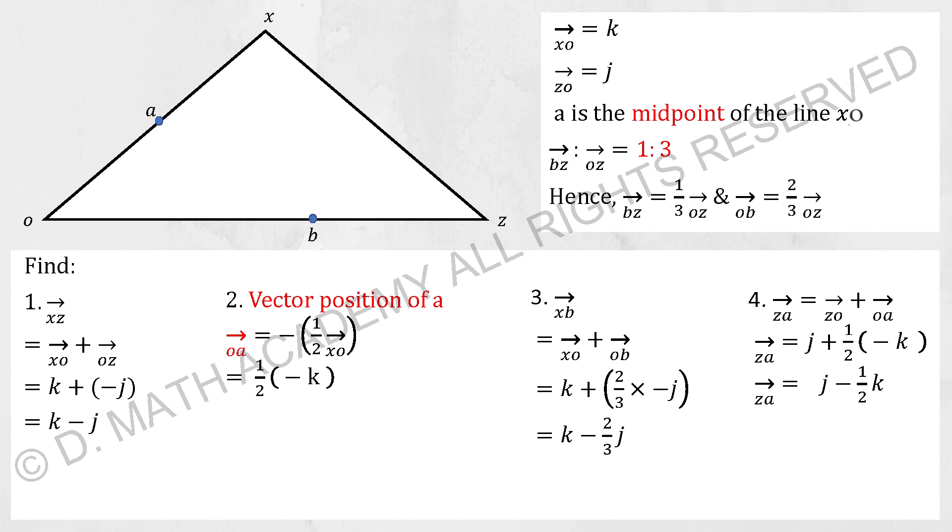For the third question, we have XB. So for us to get to XB, it will go to point XO and OB. XO is K and OB is actually 2 over 3 of OZ. So it will be K plus 2 over 3 times negative J. So your final answer, K minus 2 over 3 J.